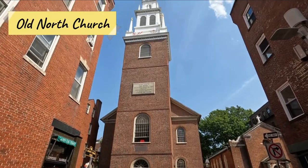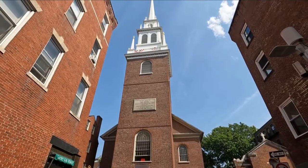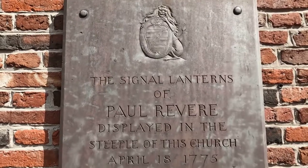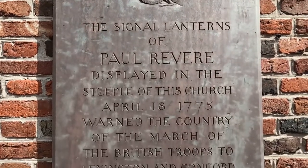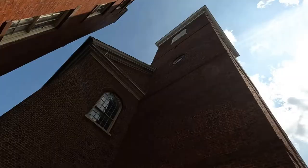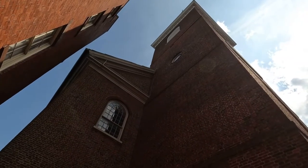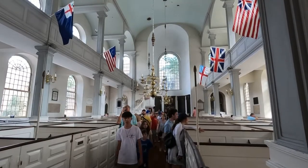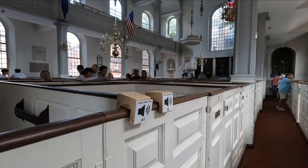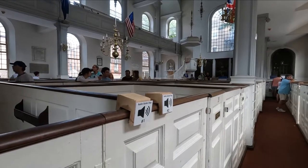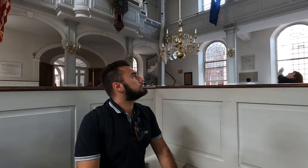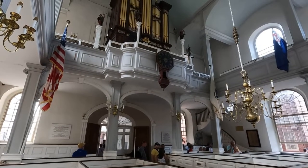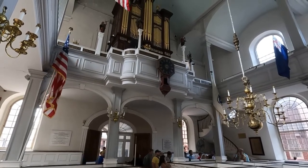A couple of blocks away is the next stop — Old North Church. This historic church was built in 1723 and is famous as the site where two lanterns were placed in April of 1775 to signal Paul Revere and other colonists that the British were coming, ultimately initiating Paul Revere's famous midnight ride to Lexington and Concord. The church is an excellent example of Georgian architecture and one of the most famous Anglican churches in America. The late Queen Elizabeth even attended services here when visiting Boston several decades ago.